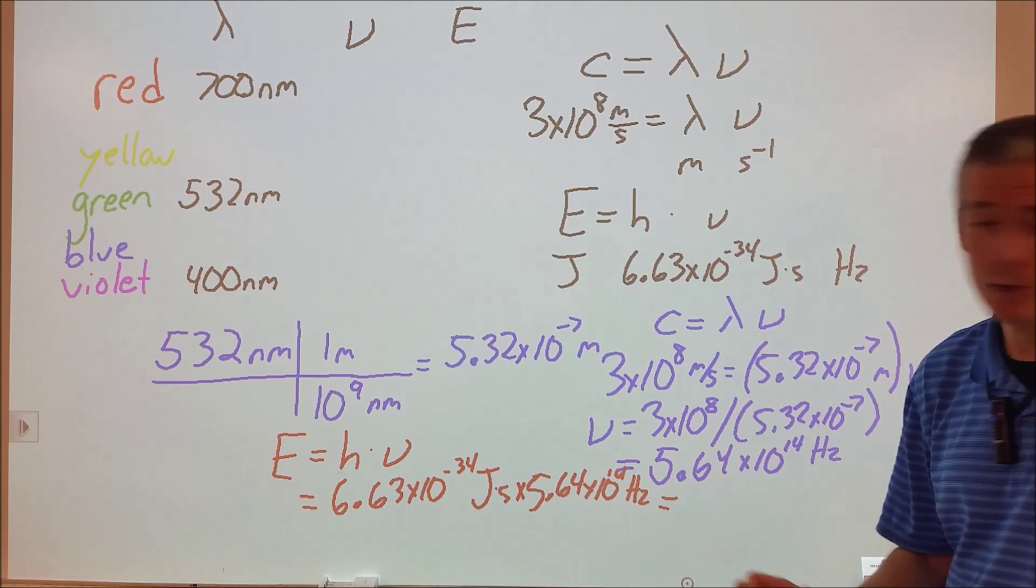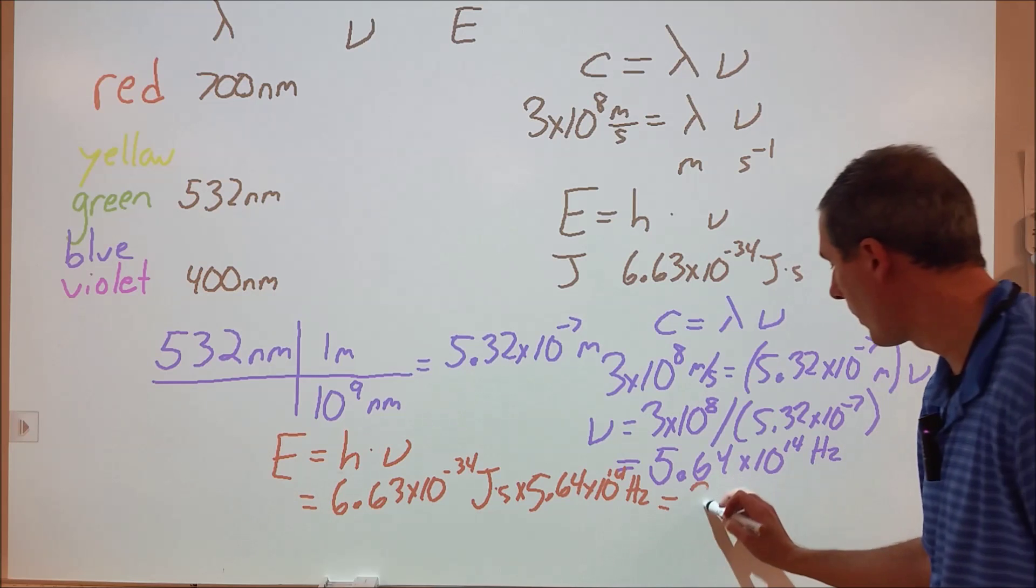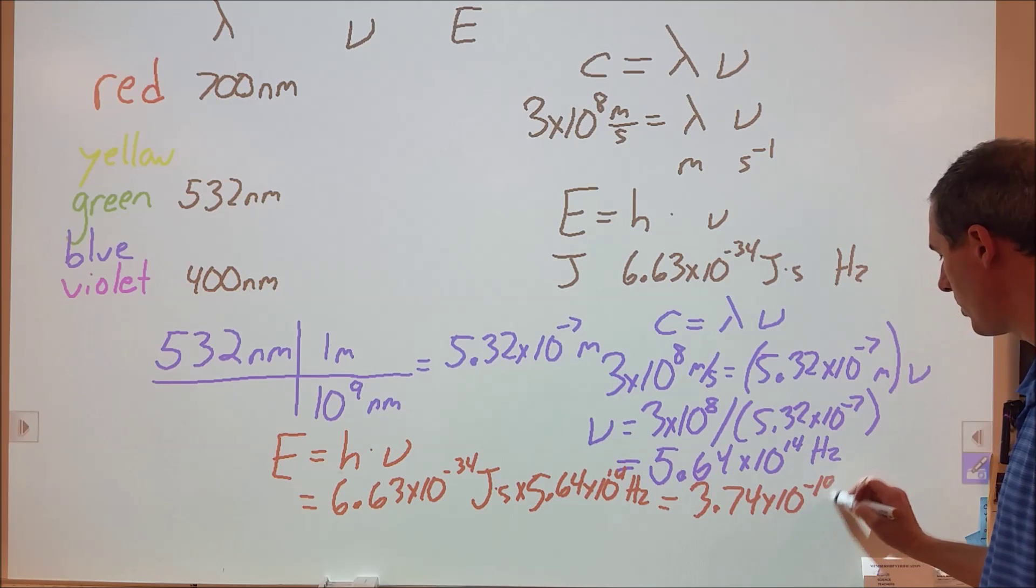6.63 times 10 to the negative 34th joules times seconds times 5.64 times 10 to the 14th hertz. We can get our energy. It turns out that our energy of green light comes out to be 3.74 times 10 to the negative 19th joules.